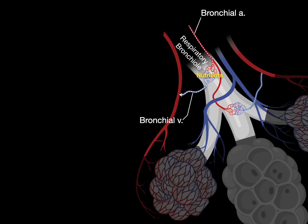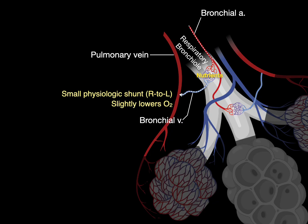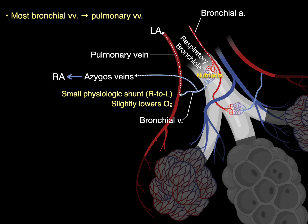Deoxygenated blood drains via bronchial veins, but these bronchial veins dump into the pulmonary vein, which is carrying oxygen-rich blood from the alveoli. This creates a small physiologic right-to-left shunt, which slightly lowers the oxygen content in the pulmonary vein going back to the left atrium. Some bronchial veins drain directly into the azygous system of veins, which goes to the right atrium.